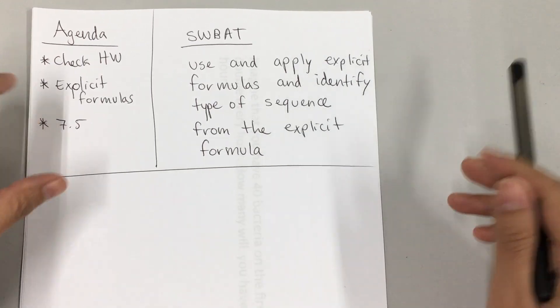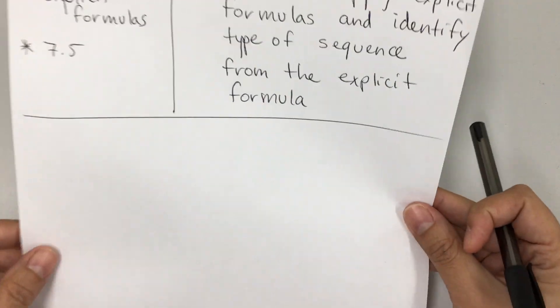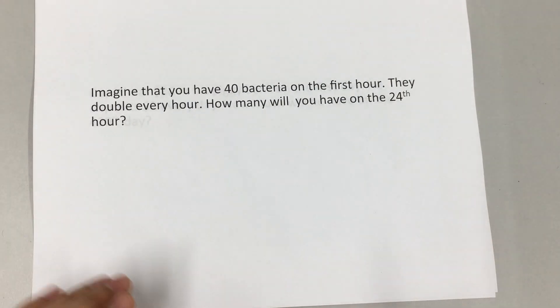When it refers to type of sequence, it means either geometric or arithmetic. So let's start with this scenario: imagine that you have 40 bacteria on the first hour. They double every hour. How many will you have on the 24th hour?